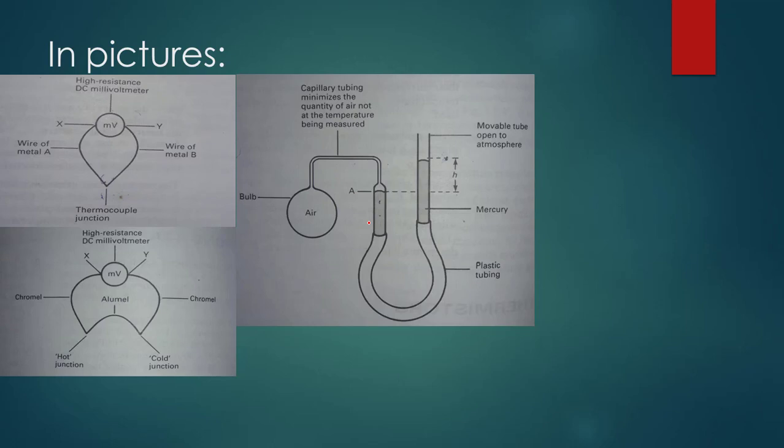For constant gas thermometers, you can see the bulb. This arrangement is a constant volume gas thermometer. You can see the bulb contains air, either maintaining constant volume or constant pressure depending on the type. What we do is, for example, we have a container in water. We sink the bulb in the water. Depending on what type of thermometer, if it's at constant volume, we know the formula: PV divided by T equals constant.